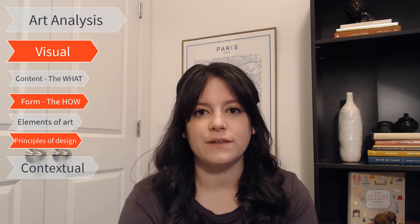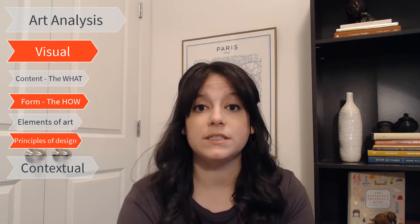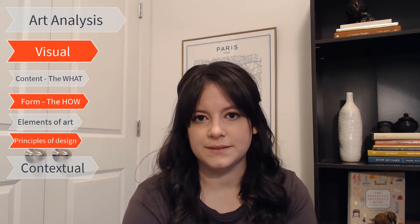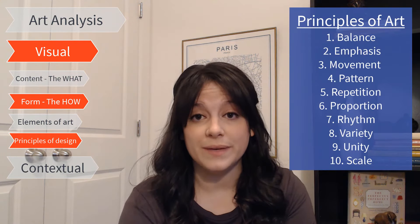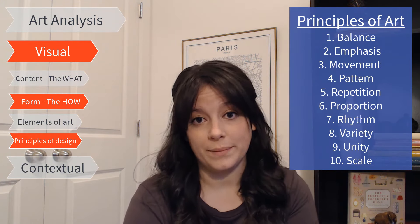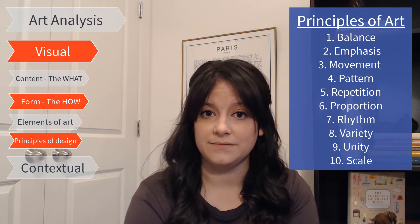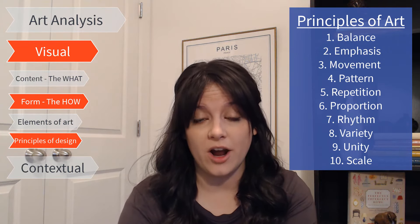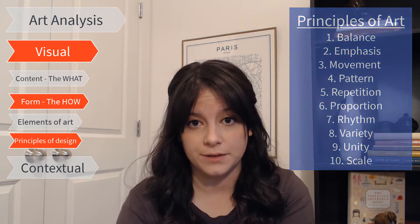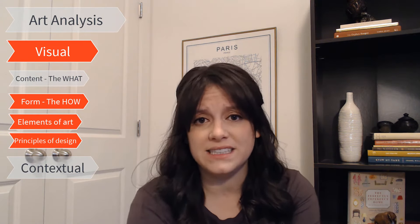The second aspect of form are the principles of design — the foundational principles of art that almost every artist will use. There are ten principles: balance, emphasis, movement, pattern, repetition, proportion, rhythm, variety, unity, and scale. For more details on each, download my art analysis PDF in the description below. These are very straightforward — things you can see. You can tell if there's balance; you can see the lines and how they intersect. Are they vertical? Are they horizontal? And how does that affect the piece of art? That is art analysis: figuring out what you see and what you can derive from it.